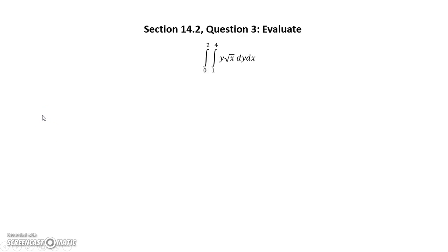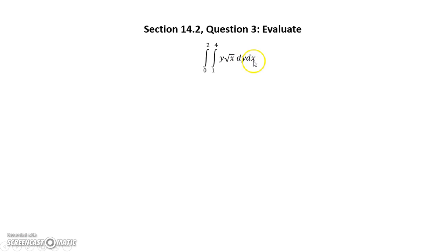In this tutorial I'm going to solve problems from section 14.2, which is basically double integrals in Cartesian. The question has a function of two variables, y root x, with dy dx, and you have limits of integrals, but it's not clear which limits belong to which variable. The rule is that the far integral sign corresponds to the far differential — so the outer limits are for x. I'll rewrite it more clearly: the first set of limits is for y, and the second integral is for x.